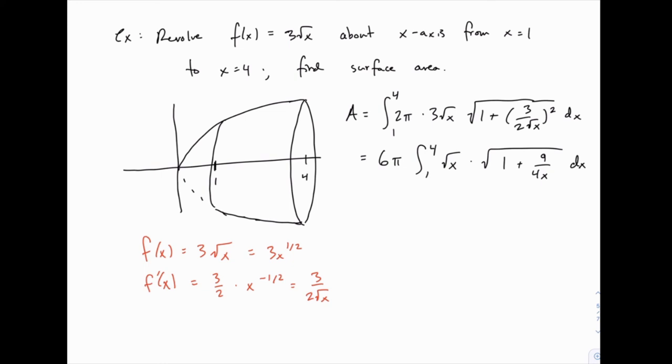And now, let's combine those two square roots. So we can multiply and distribute the x through, so we get x plus 9 over 4. At that point, the integral is pretty straightforward.